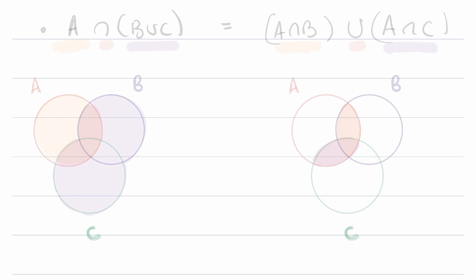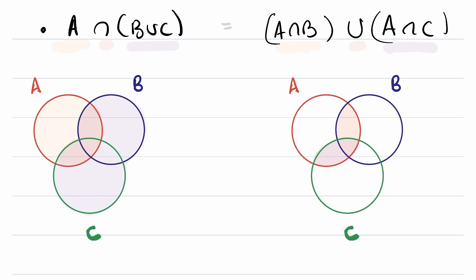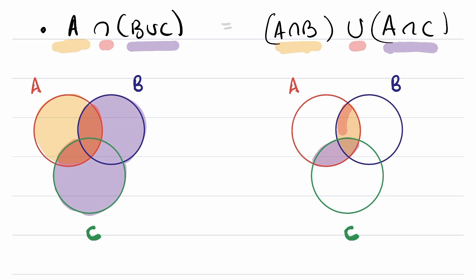We can also explore another distributive property: A intersect (B union C) versus (A intersect B) union (A intersect C). In purple I'll have B union C, and in yellow A — so the intersection is that region. On the right-hand side, I'll have A intersect C in purple and A intersect B in yellow, and the union of those two things adds them all up. We see that these sets are equal to each other.